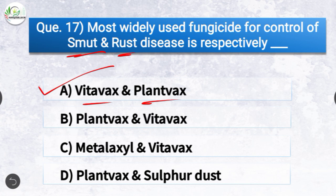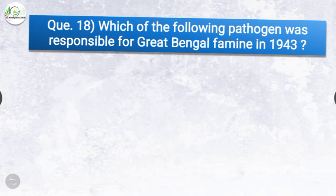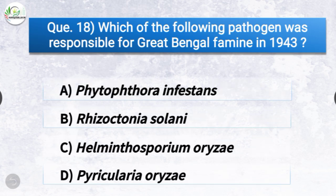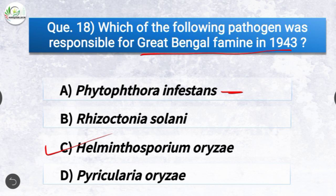Question number eighteen: Which of the following pathogen was responsible for the great Bengal famine in 1943? The options are Phytophthora infestans, Rhizoctonia solani, Helminthosporium oryzae, or Pyricularia oryzae. The correct answer is option C, Helminthosporium oryzae, also known as brown leaf spot. Helminthosporium oryzae was responsible for the great Bengal famine in 1943, whereas Phytophthora infestans was responsible for the Irish famine and caused late blight of potato.